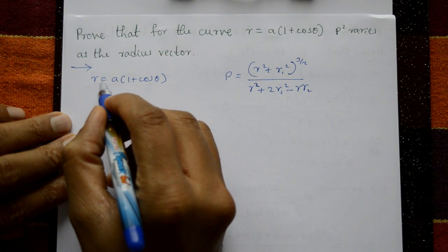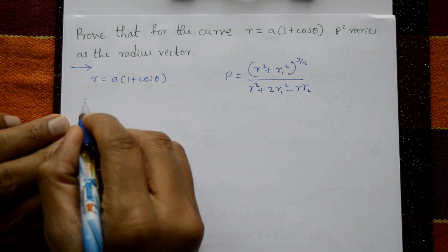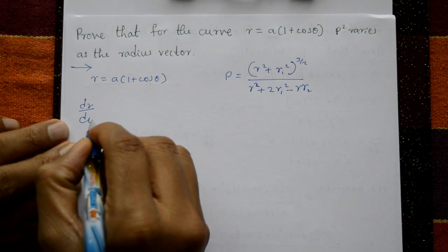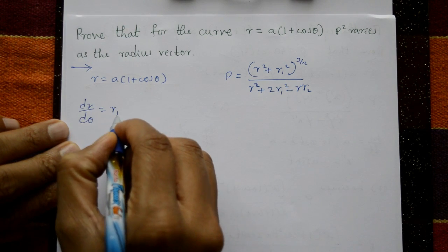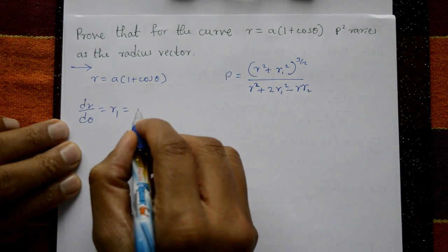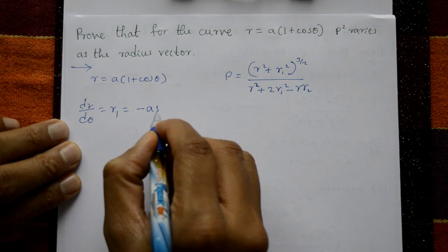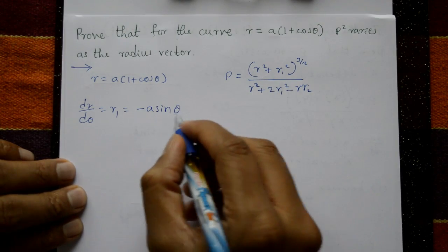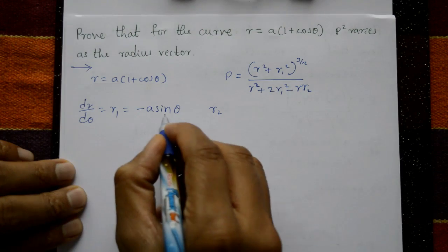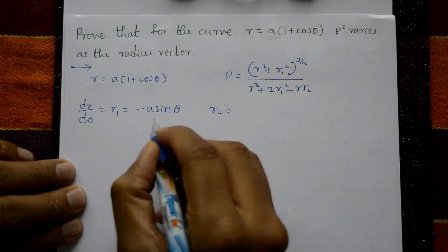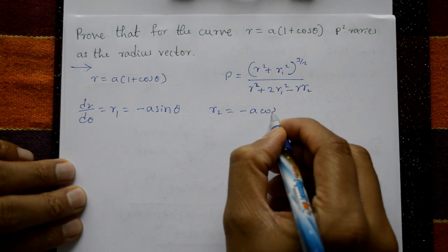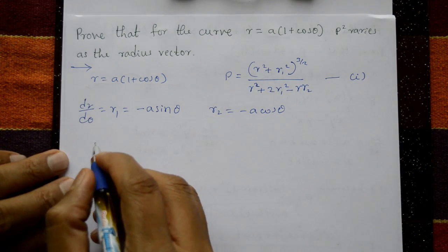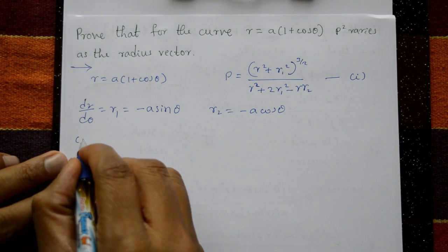Differentiating with respect to θ: dr/dθ = r1 = −a·sinθ. Differentiating again: r2 = −a·cosθ. This is equation number one.